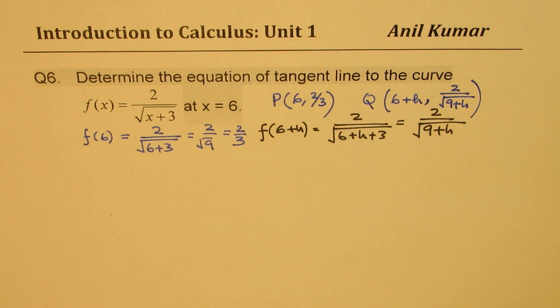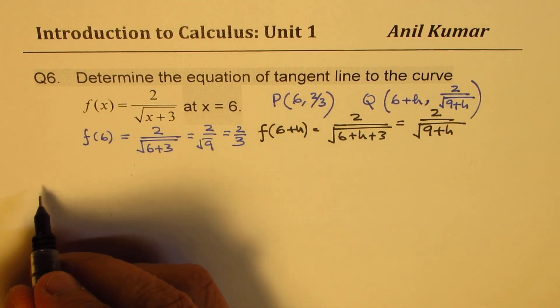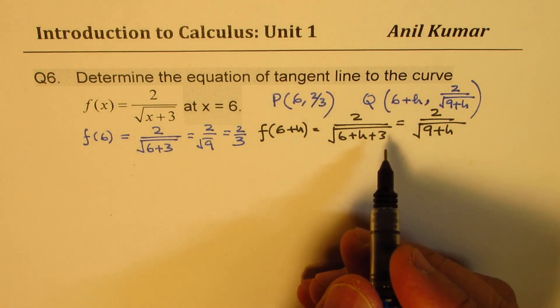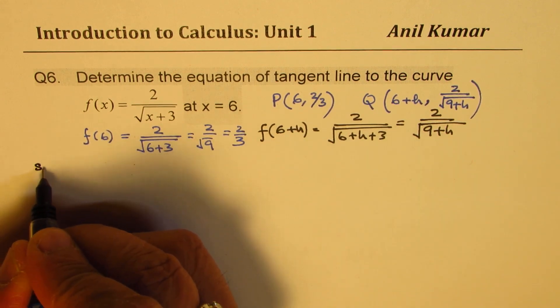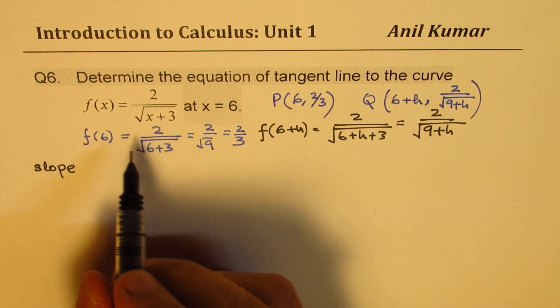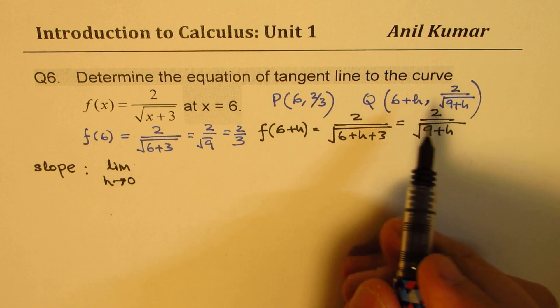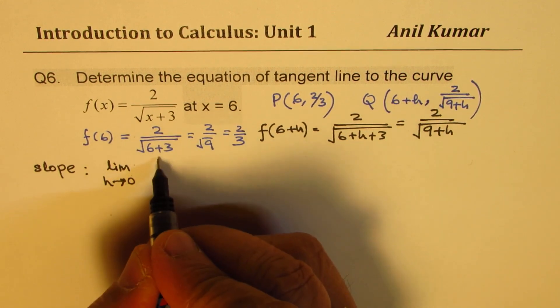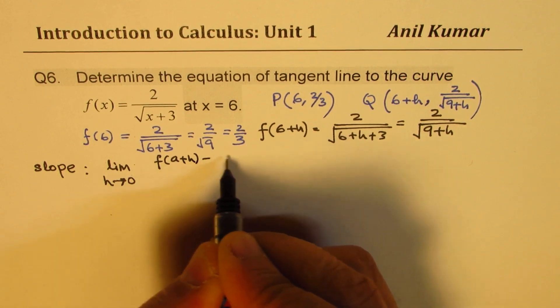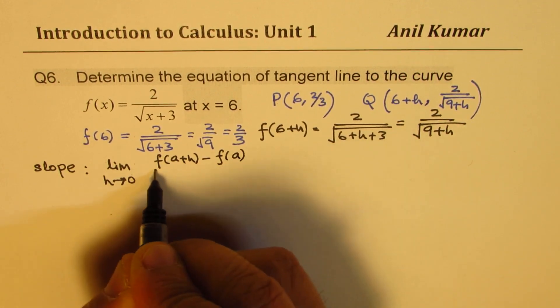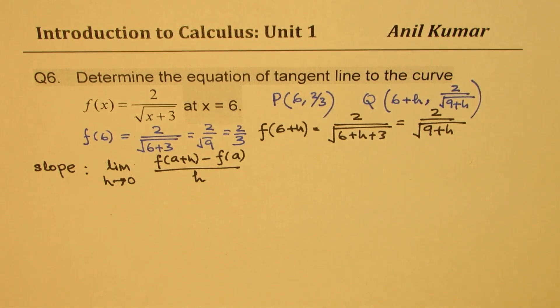So these are the two points and knowing the two points, we can always find the slope of the tangent line. So we are going to use now difference quotient method to find the slope. So to find the slope, we can see that the slope is the limit where h approaches 0 for [f(a+h) - f(a)]/h. So by definition, that is how we are going to find the limit.